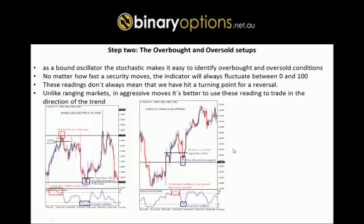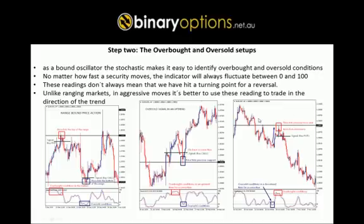To make it step by step: first identify the direction of the trend — in this example it's up. When we hit overbought levels, you wait for the correction. Then when we hit oversold levels at a previous level of support and move back up through 20, we have a signal to buy calls and trade the trend. The same thing applies for a downtrend.